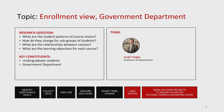With each of these projects, we'll introduce the set of questions that motivate the work and the key constituencies. Here: what are the student patterns of course choice within the Gov Department? How do they change for subgroups of students? What are the relationships between courses? What are the learning objectives for each course? And then the key constituencies: undergraduate students and the Gov Department.